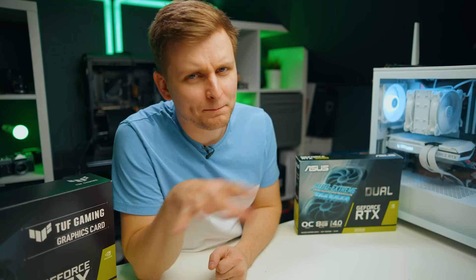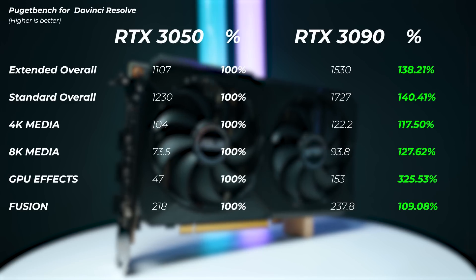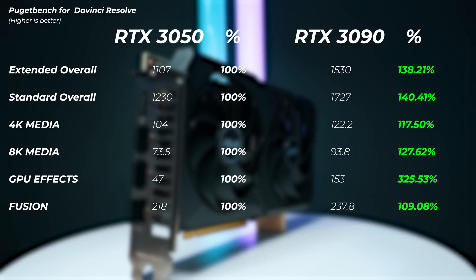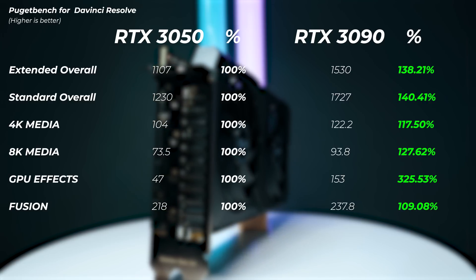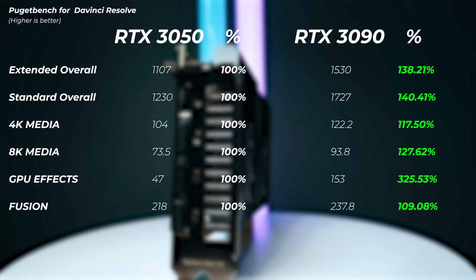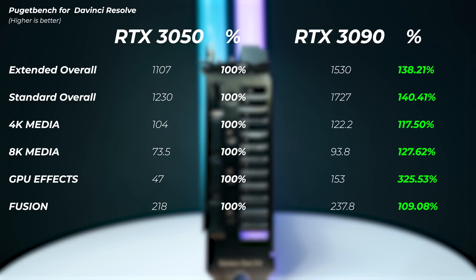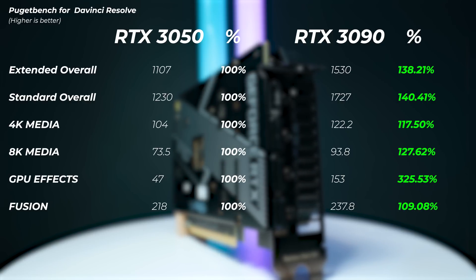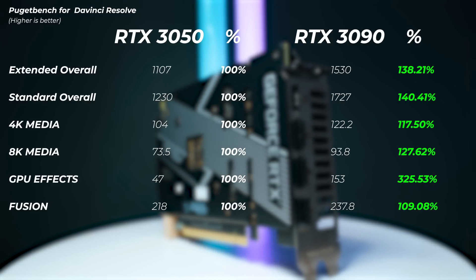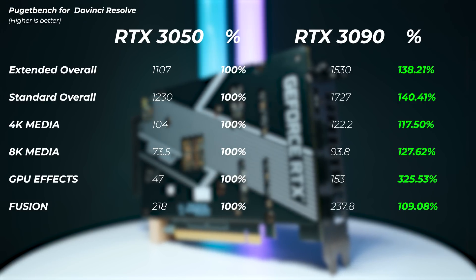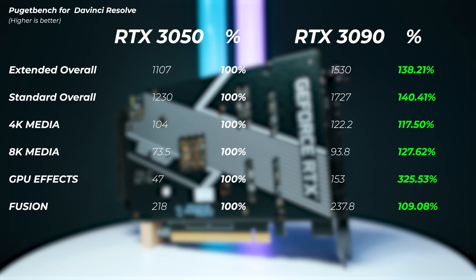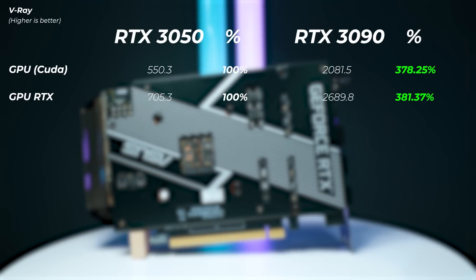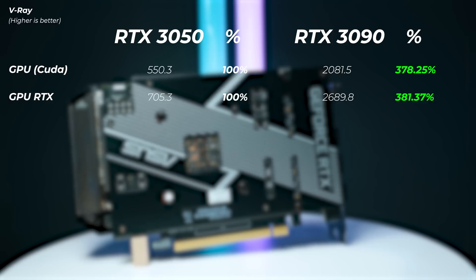In DaVinci Resolve, the RTX 3090 is 38% faster overall — a bigger gap than in Premiere Pro because DaVinci Resolve can utilize the GPU more. GPU effects are 3.2 times faster on the 3090 than the 3050. Fusion doesn't add much difference, but 4K and 8K media playback is better on the 3090. Overall we're averaging roughly 38–40% faster on the RTX 3090.